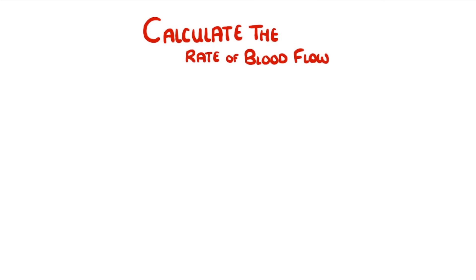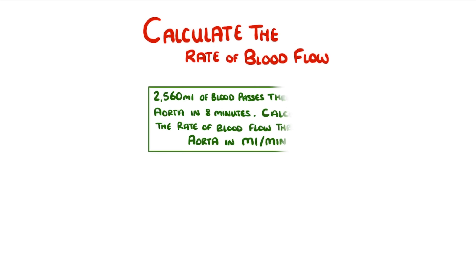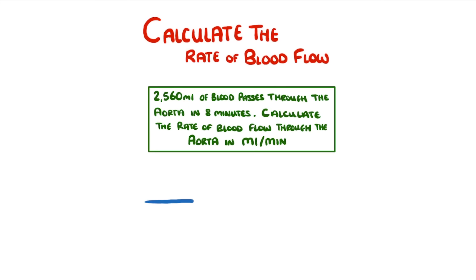Before we finish, let's quickly cover how to calculate the rate of blood flow. A typical question could look something like this: 2,560 ml of blood passes through the aorta, which is the big artery that leaves the heart, in 8 minutes. Calculate the rate of blood flow through the aorta in millilitres per minute. In a question like this, we would just divide how much blood has flowed — 2,560 — by the time it took — 8 minutes — which gives us 320 millilitres per minute.